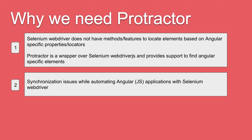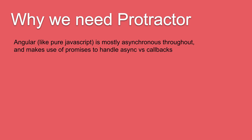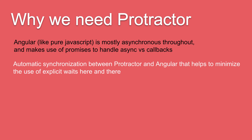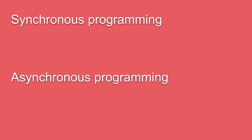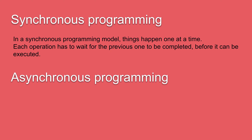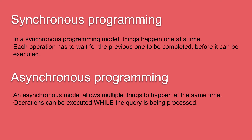The second reason why we need Protractor is synchronization issues when automating Angular applications with Selenium WebDriver. You can automate Angular applications with Selenium WebDriver, but there are a lot of desynchronization issues due to the asynchronous behavior of Angular applications. Angular, like JavaScript, is mostly asynchronous and makes use of promises to handle asynchronous callbacks. To understand this, we need to know the difference between synchronous and asynchronous programming. In a synchronous programming model, things happen one at a time — you send a request, wait for the response, and then move to the next step. In asynchronous programming, multiple things can be done at a time.